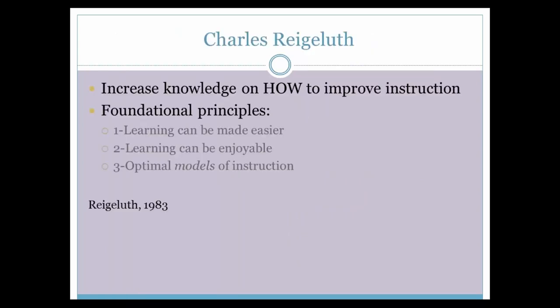There is a theorist behind this. His name is Charlie Rigeluth. He thinks that learning can be made easier with correct design. Learning can be enjoyable, and there are optimal models of instruction. You can't use the same model over and over, but there are optimal models. Does anybody have any thoughts about that? Do you agree? — Agree.